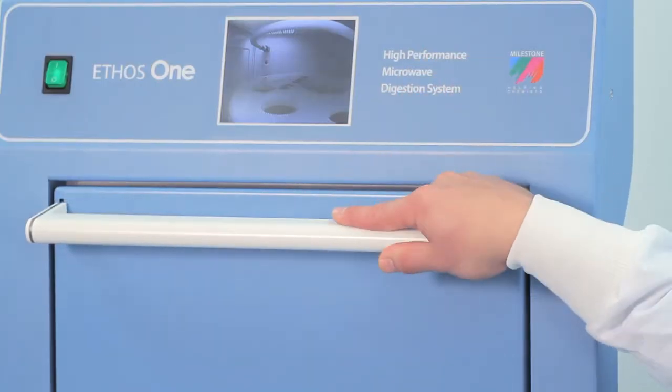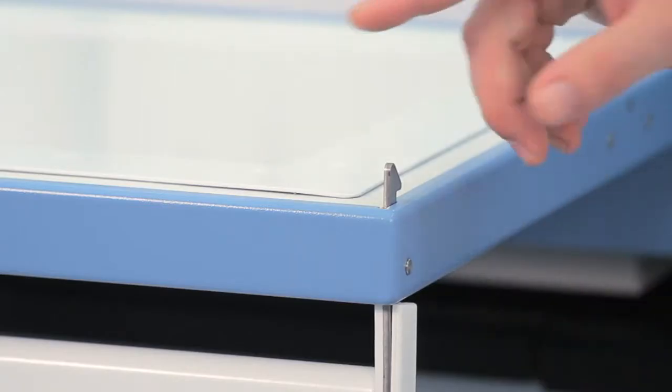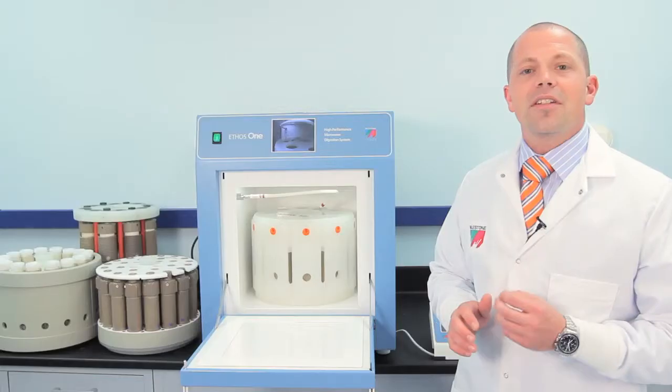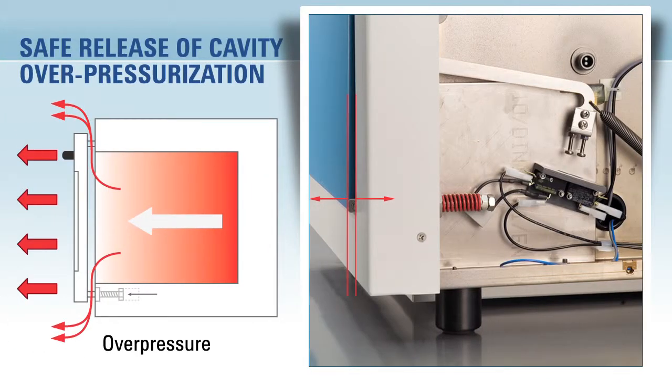The handle of the Ethos One securely fastens with twin latches that lock into steel enclosures. This door is locked closed until the completion of the microwave program. The door features a unique pressure release system that is mounted on heavy duty steel springs.